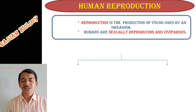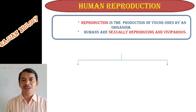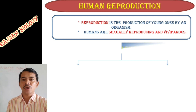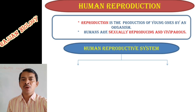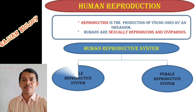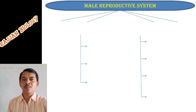Viviparous refers to any animals which directly give birth to their young ones. In human reproduction, there are majorly two types of systems: one is the female reproductive system and another one is the male reproductive system. In today's session we are discussing in detail about the human male reproductive system.